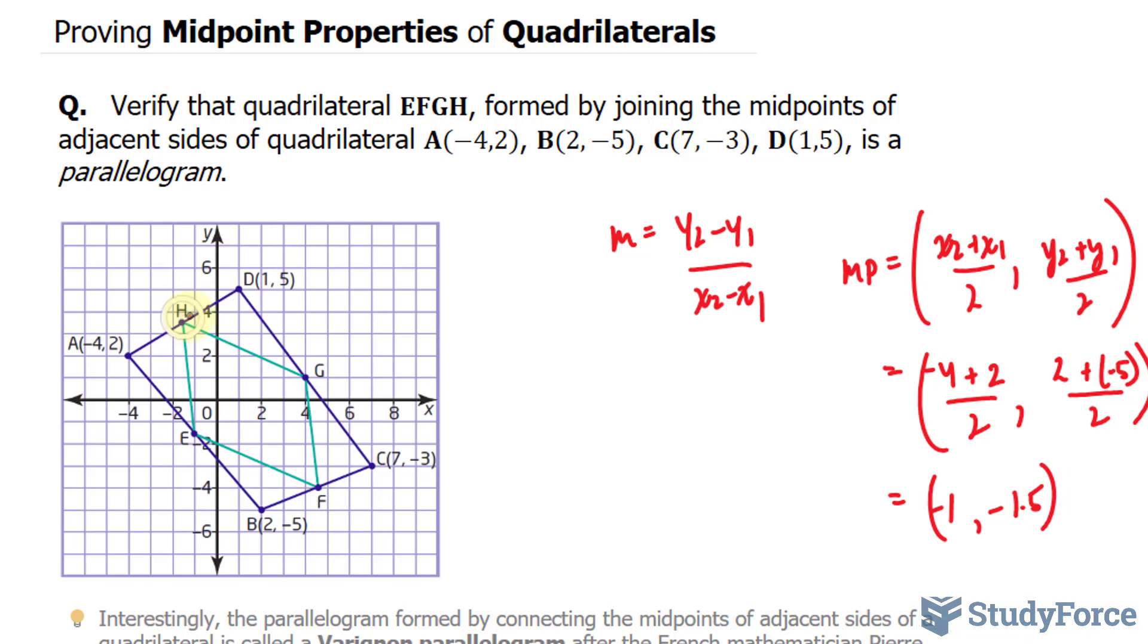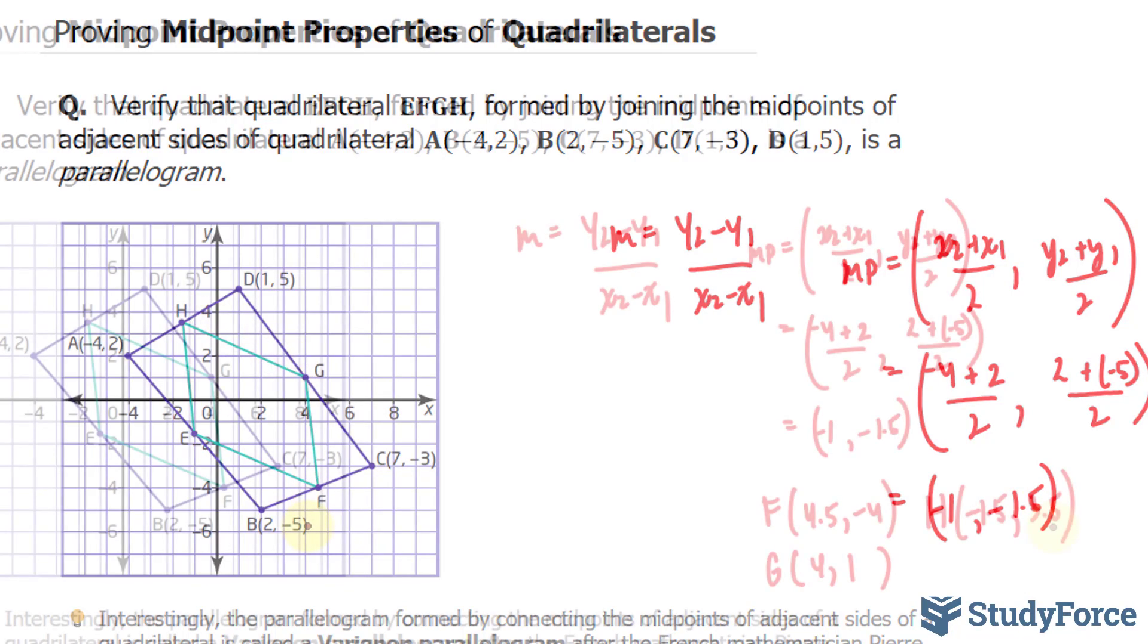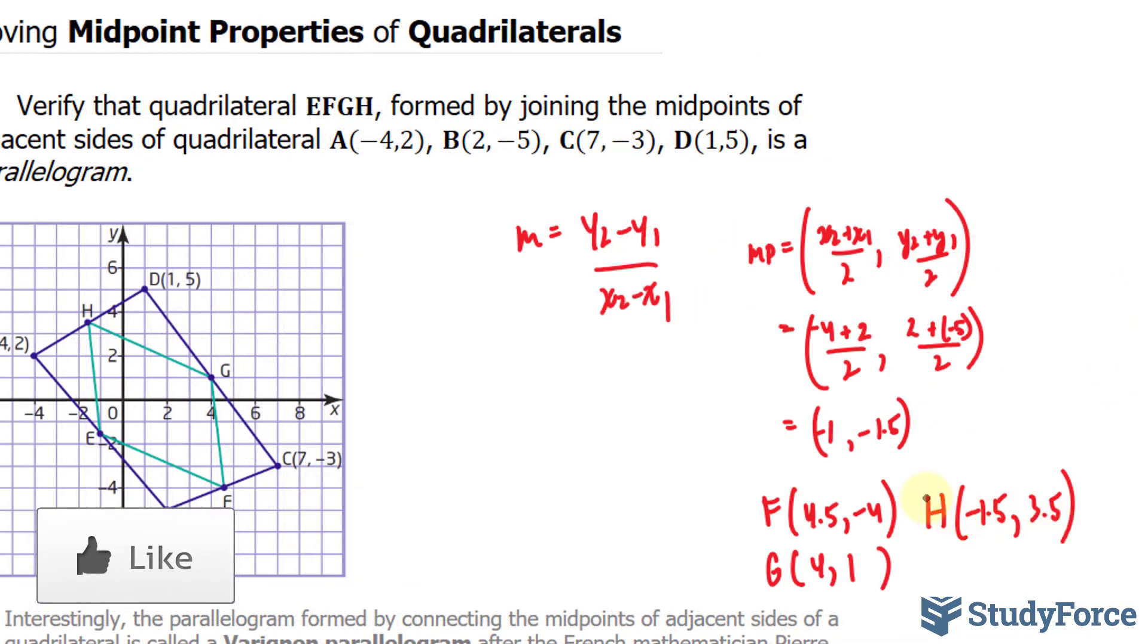I'm going to go ahead and do the same thing for H, G, and F. I've summarized my findings underneath, and now I'm ready to find the slopes.